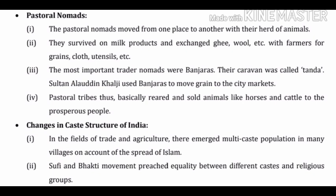Next topic is pastoral nomads. Point one: pastoral nomads move from one place to another with their herd of animals. Point two: they survive on milk products and exchange ghee, wool, etc. with farmers for grain, cloth, and utensils. Point three: the most important trader nomads were the Banjaras — their caravan was called tanda. Sultan Alauddin Khilji used Banjaras to move grain to city markets. Point four: pastoral tribes basically reared and sold animals like horses and cattle to prosperous people.